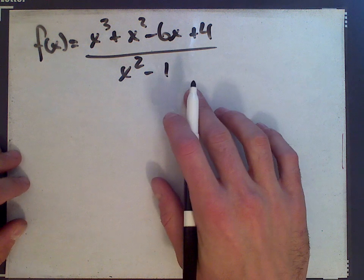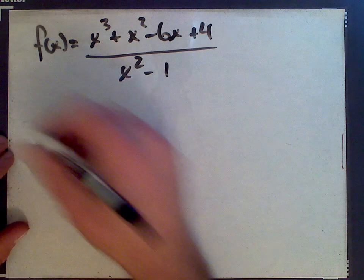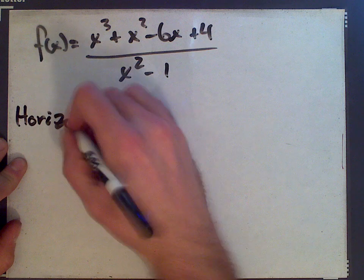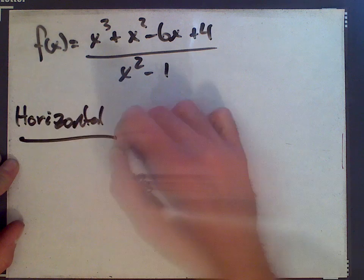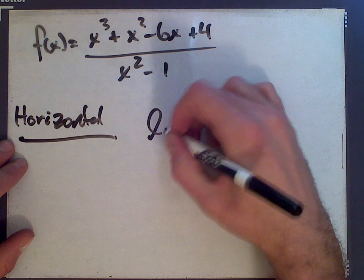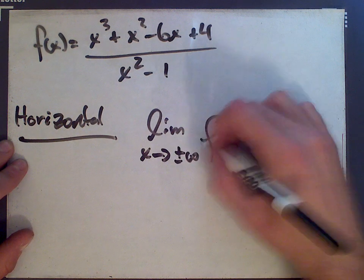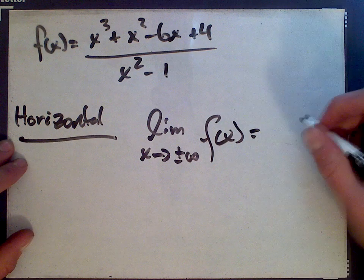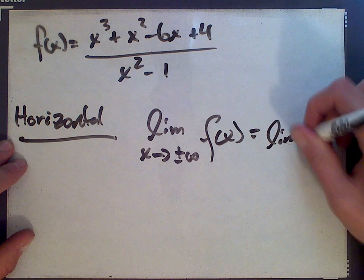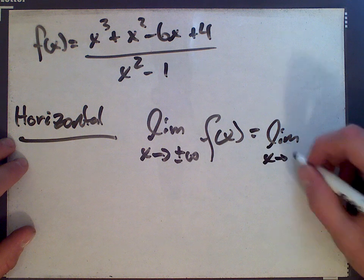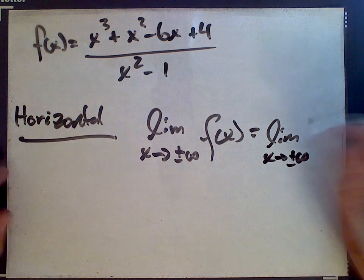Let's take care of the horizontal first. To test if there's a horizontal asymptote, you want to take the limit as x goes to plus or minus infinity of f of x. And what's the rule for rational functions? This is the quotient of two polynomials.